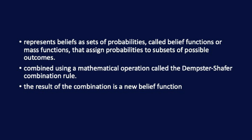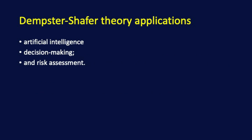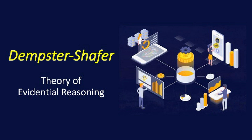The Dempster-Shafer theory has applications in various fields, including artificial intelligence, decision making, and risk assessment. It is particularly useful in situations where there is uncertainty, ambiguity, or conflicting evidence, and where traditional probability theory may not be applicable.